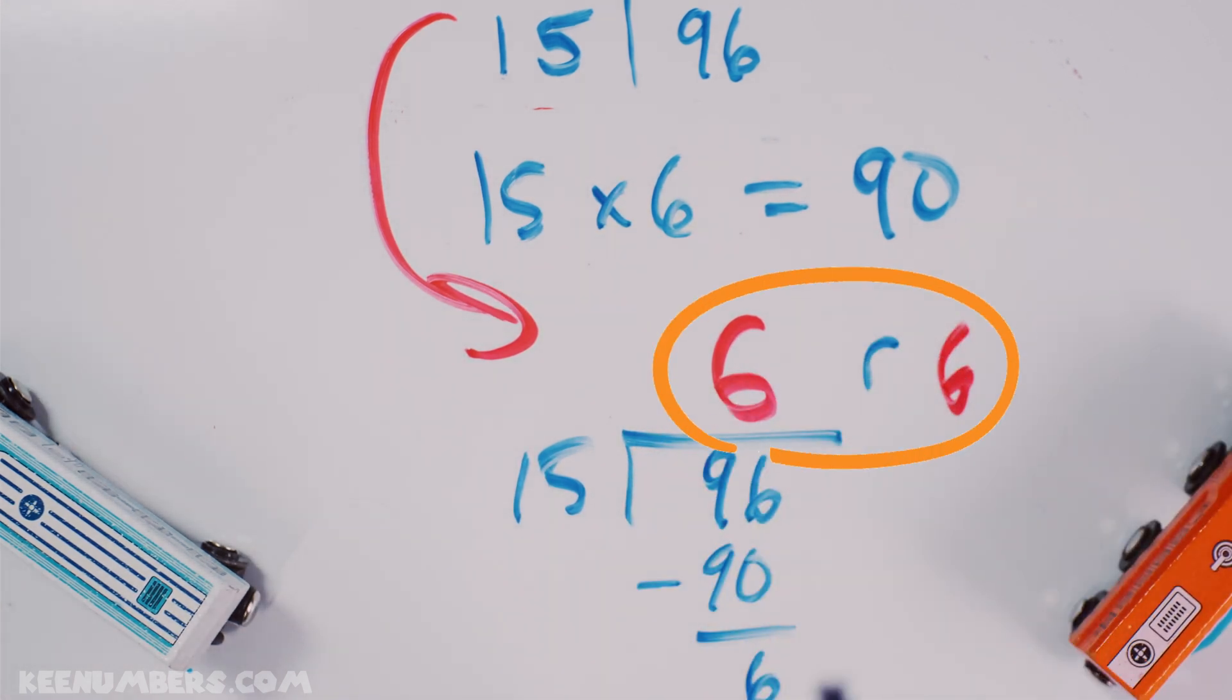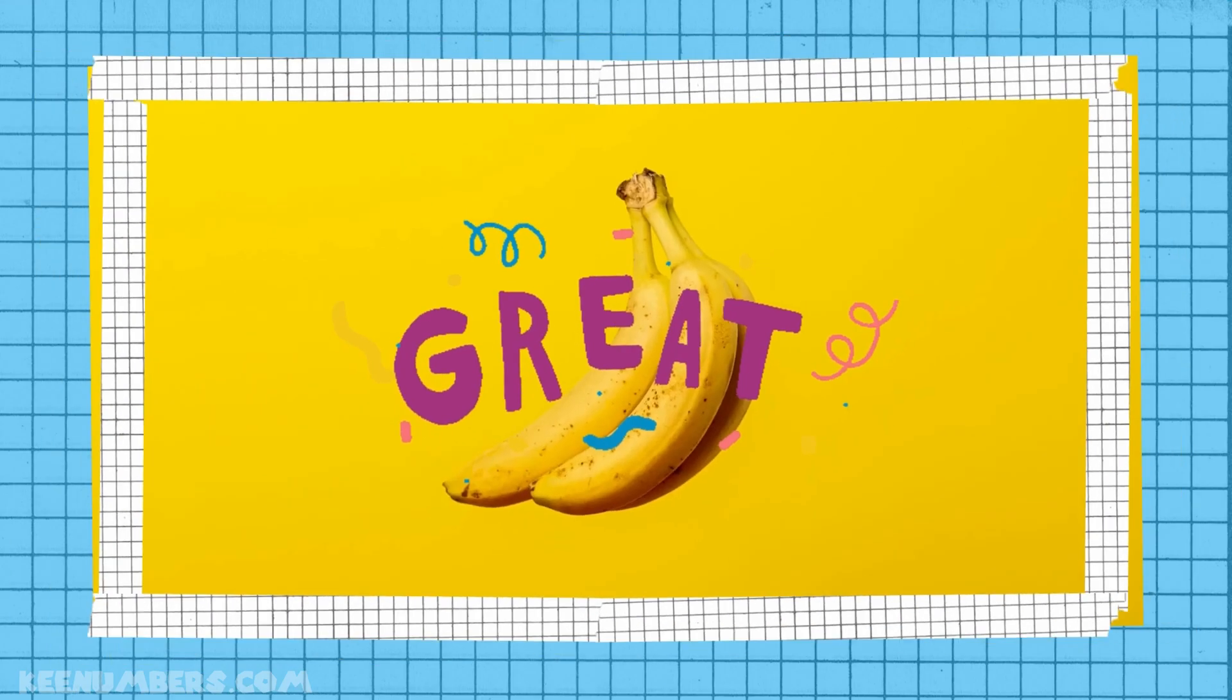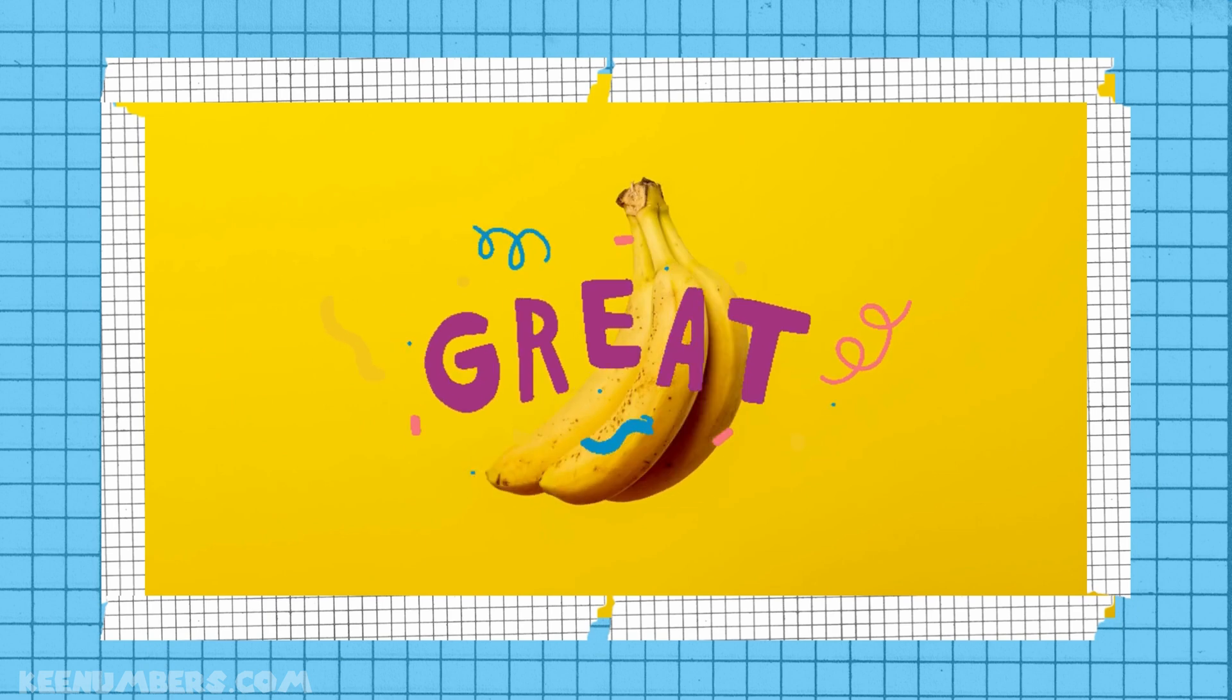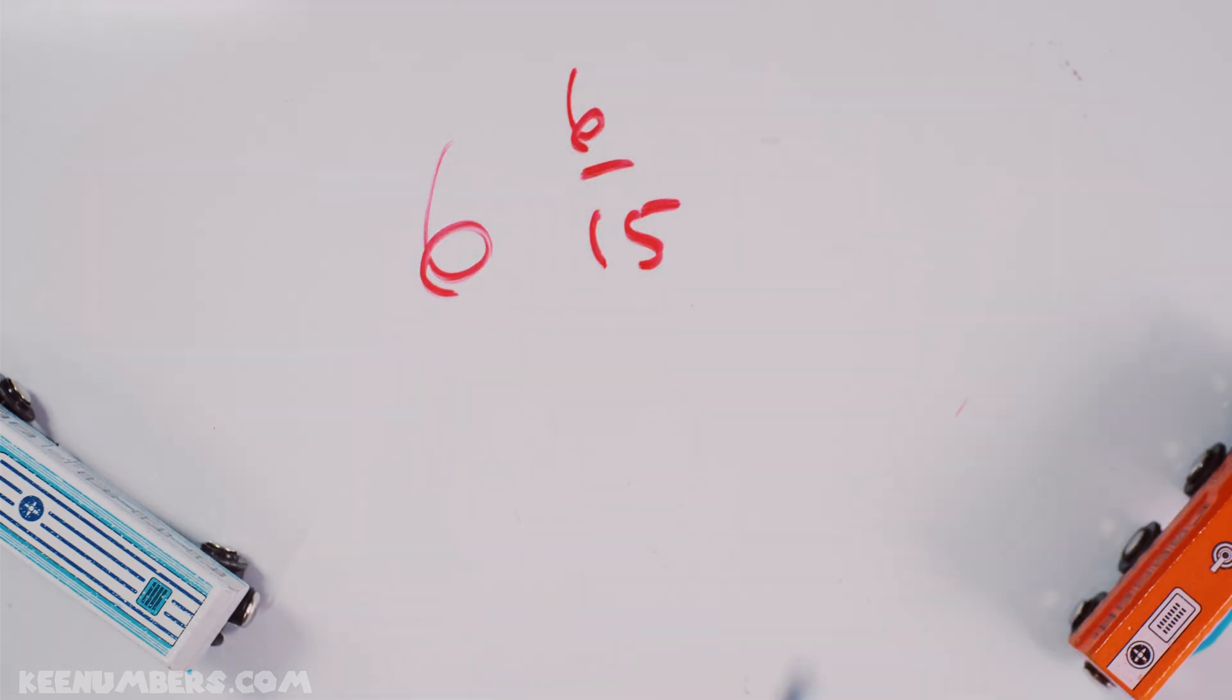Remainder of 6. Now, you can write that more succinctly as 6 and 6 fifteenths. That's your answer. Ding, ding, ding, ding, ding.